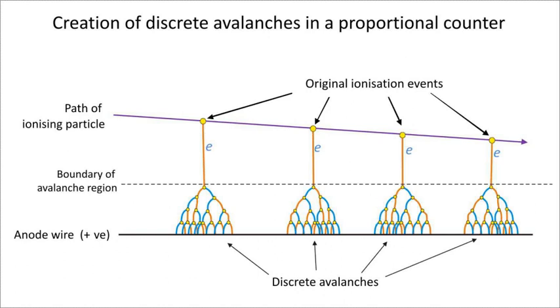If avalanches start to self-multiply due to UV photons as they do in a Geiger-Müller tube, then the counter enters a region of limited proportionality until at a higher applied voltage the Geiger discharge mechanism occurs with complete ionization of the gas enveloping the anode wire and consequent loss of particle energy information.